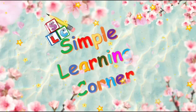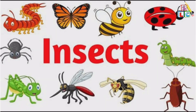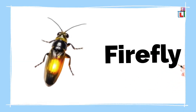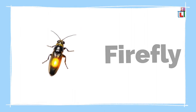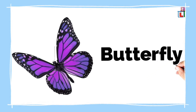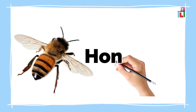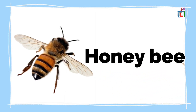Simple Learning Corner. Hello kids! In this video you're going to learn 20 insect names in English with clear pictures and correct pronunciation. Please watch the video till the end. Now let's start the video. Firefly. Butterfly. Honeybee.